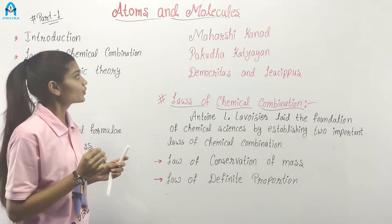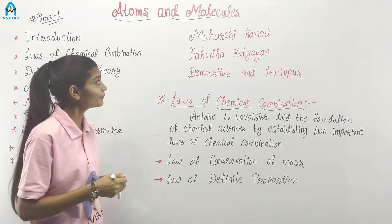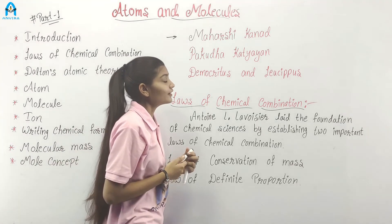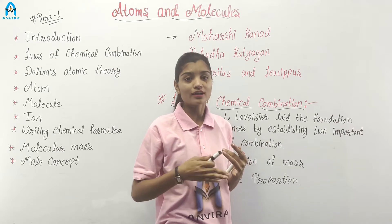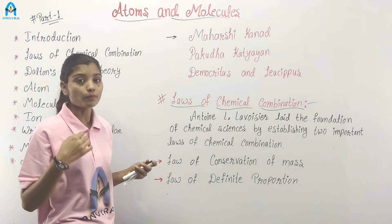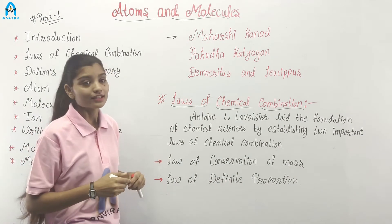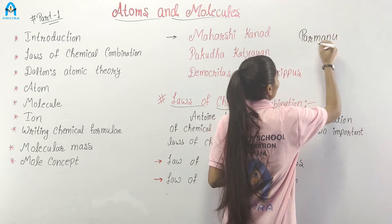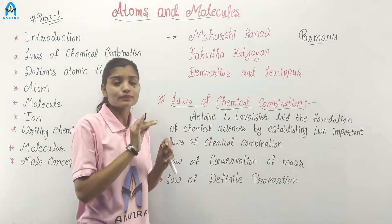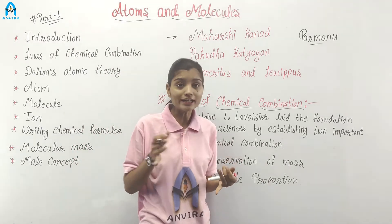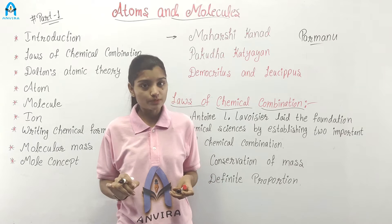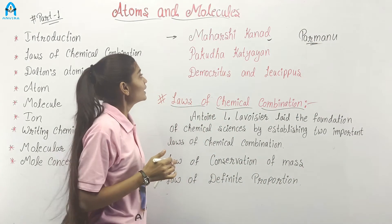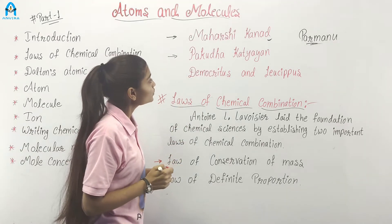We discuss about some scientists who worked in the field of atoms and molecules. First, the Indian philosopher Maharshi Khandel proposed that when we divide matter smaller and smaller, the smallest particle we obtain is known as Parmanu. Another Indian philosopher, Papuda Katyaayan, also contributed to this concept.